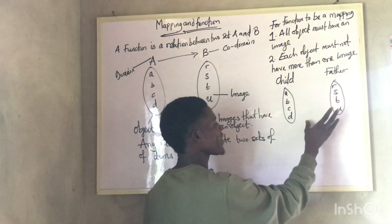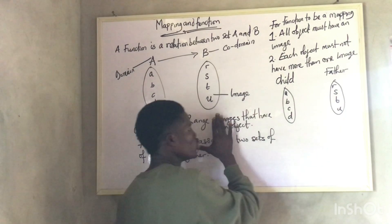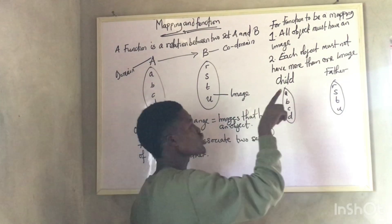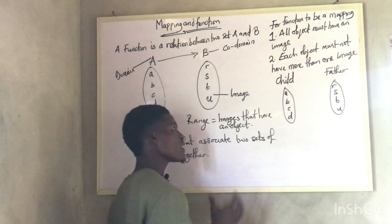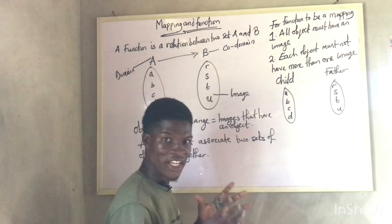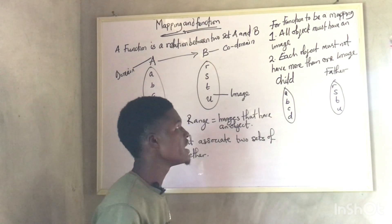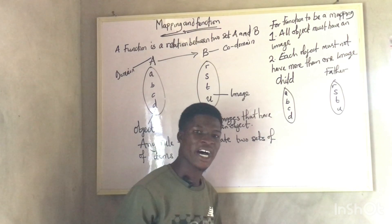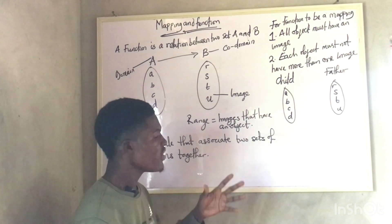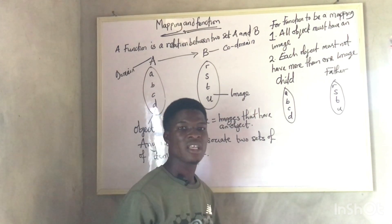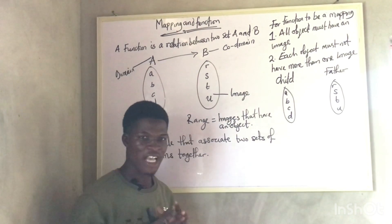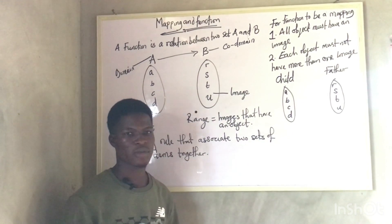So this is how you can relate these rules to functions. A function is a mapping. For a function to be a mapping, it has to satisfy these two rules: every object must have an image, and each object must not have more than one image. We are going to see an example right now that will illustrate what these things are being referred to, so stay tuned.